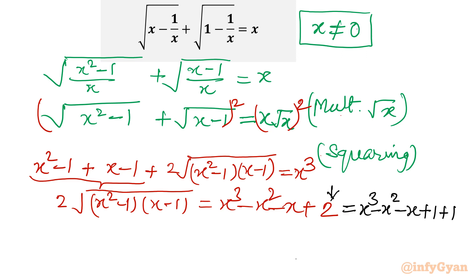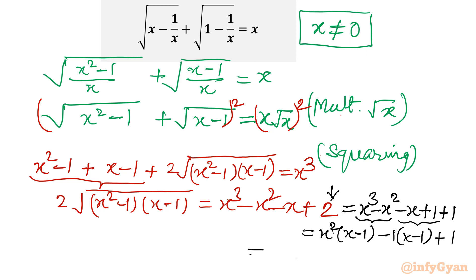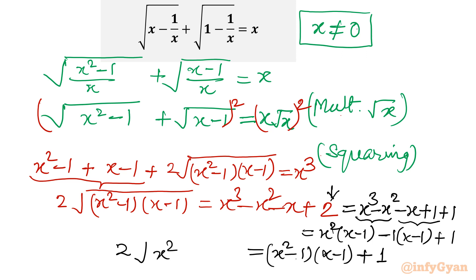Now I split the right-hand side by taking x² common from the first two terms, giving x²(x - 1), and taking negative 1 common from the third and fourth terms, giving -(x - 1). So the RHS factors as (x² - 1)(x - 1) + 1. The LHS is 2 times square root of (x² - 1)(x - 1).